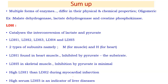To summarize: isoenzymes are multiple forms of enzymes that differ in physical and chemical properties and are usually oligomeric. LDH is tetrameric (four subunits). Examples of isoenzymes include malate dehydrogenase, lactate dehydrogenase, and creatine phosphokinase. LDH catalyzes the interconversion of lactate and pyruvate, with five isoenzymes (LDH1–5) made from two types of subunits: M and H. LDH3, for example, contains two H and two M subunits.